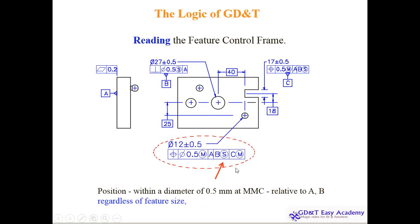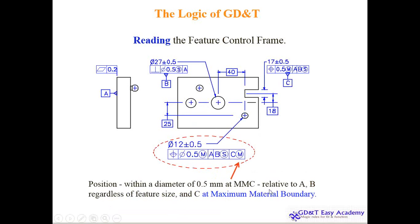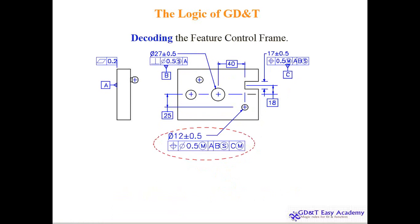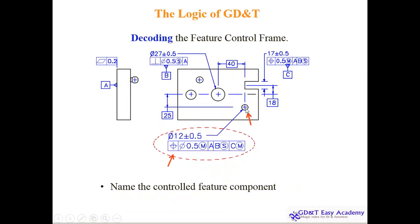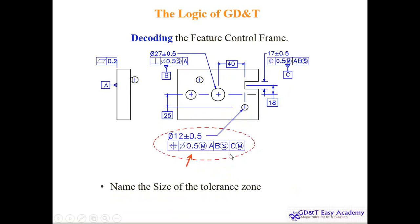C is the maximum material boundary (MMB), not maximum material condition (MMC). Now let's decode it: the geometry control tool is a positioning tool — this is the positioning interference. The shape is a cylindrical tolerance zone. The next element is size: 0.5 mm. The modifier is the maximum material modifier, applied here.